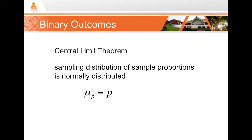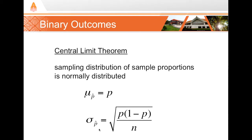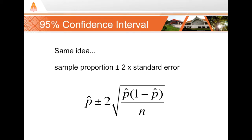The mean of all our sample proportions is equal to the population proportion, and the standard deviation of the sample proportions — the standard error — is equal to the square root formula. Taking this information, we can compute a 95% confidence interval: start with the sample proportion and add and subtract about two standard errors. With binary outcomes, this range is sometimes referred to as the margin of error.